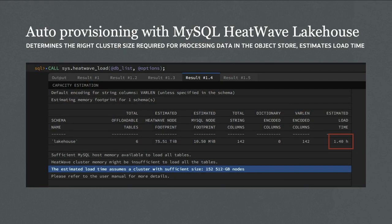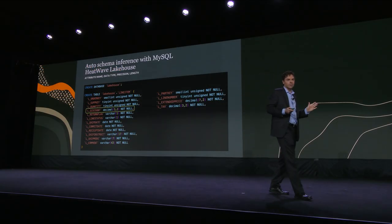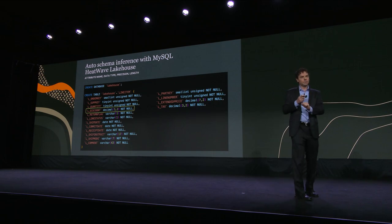Here's an example. You run Autopilot, point it at your files, and it tells you how big a cluster you need — you can automatically provision that cluster. Here's the schema it figured out: a table based on that file, with column names and data types. You could change that if you like, but what it infers is usually quite good.